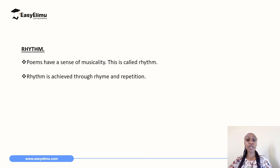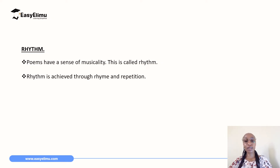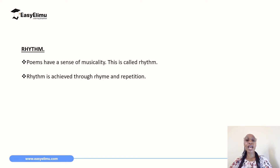When you read or recite a poem, you can tell that it's almost like a song — there's a form of musicality, a way in which it is flowing. We call that rhythm. To achieve this rhythm and musicality, we can do that by repetition. You will see that some poems have some form of repetition — maybe the last line is repeated everywhere, or some specific words or lines are repeated throughout the poem.